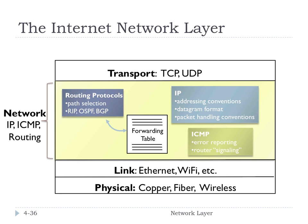Here's a visual overview of where we've been, where we are, and where we're going. We've seen the transport layer in TCP and UDP. We know they're running on top of the network layer, which is what we're looking into now. The network layer sits on top of a link layer, which is something like Ethernet or Wi-Fi, which is on top of a physical layer — copper, fiber, or wireless.